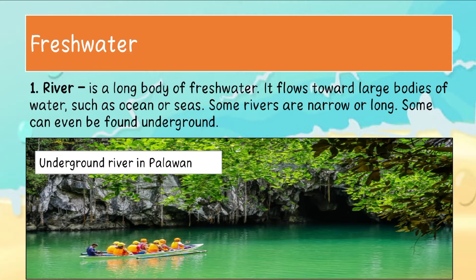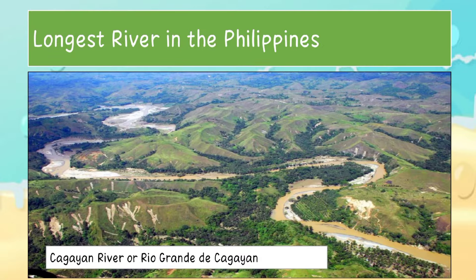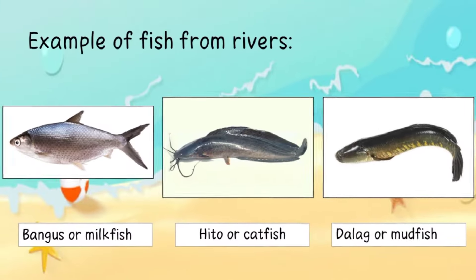Fresh water — a river is a long body of fresh water that flows toward large bodies of water such as an ocean or sea. Some rivers are narrow or long; some can even be found underground. The longest river in the Philippines is the Cagayan River, also known as Rio Grande de Cagayan.